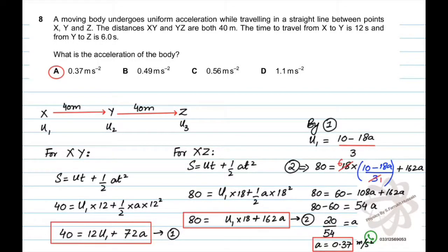As you can see in this question, a body is moving with uniform acceleration between points X, Y, and Z. X to Y and Y to Z are both equal distances away from each other. The time to travel from X to Y is 12 seconds and from Y to Z is 6 seconds.